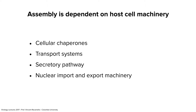Transport systems are also required. Sometimes assembly begins in the nucleus and has to get out to the cytoplasm — that movement is not by diffusion. Just as a virus entering a cell isn't by diffusion, getting out isn't either. Viruses are moved on transport systems. Many enveloped viruses are moved from near the nucleus to the plasma membrane by the secretory pathway. They also use the import and export machinery of the nucleus. Viral DNAs and some RNAs get into the nucleus through the import pathway. The virus doesn't invent any of these pathways.